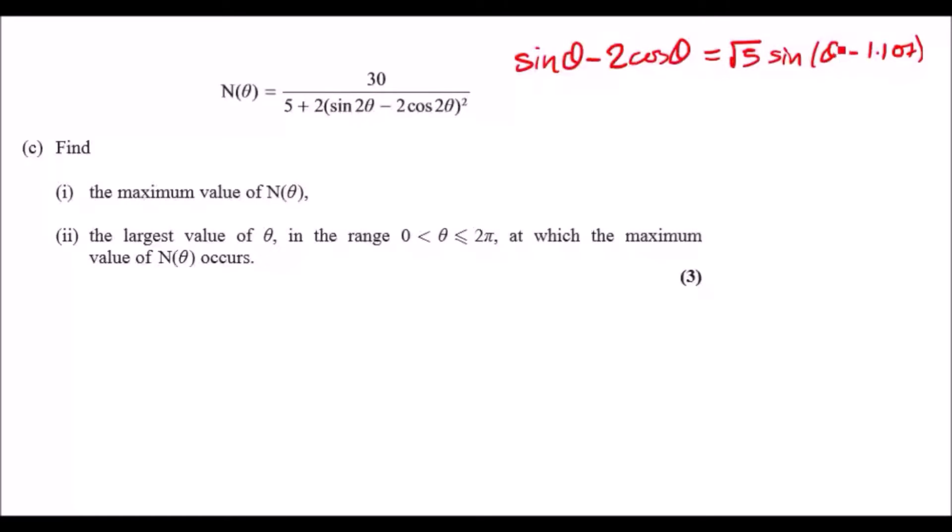This means that inside the sine this feature will also be 2θ, so you can literally rewrite all of this bit here as root 5 sin(2θ - 1.107), and of course that's all squared.